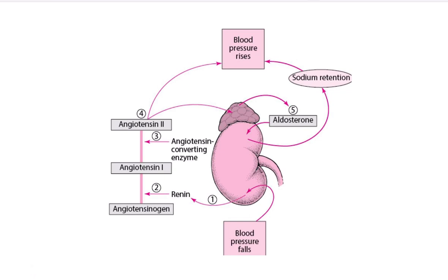When blood pressure falls, a different condition is triggered compared to when blood pressure rises. When blood pressure falls, the blood flow to the kidney is reduced — specifically, the arterial pressure reaching the kidney drops. In response to this, renin secretion occurs from the kidney.